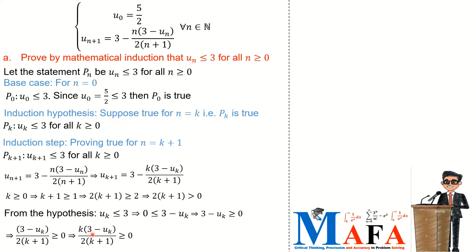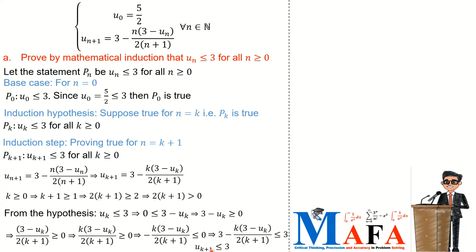Multiplying both sides by k (which is greater than or equal to 0) keeps the inequality intact. Then multiplying by the negative sign changes the inequality direction. Adding 3 to both sides, the left-hand side becomes u_{k+1} and the right-hand side is 3, so u_{k+1} is less than or equal to 3, meaning P(k+1) is true. This completes the mathematical induction step.